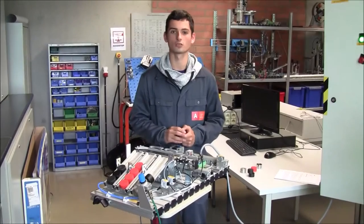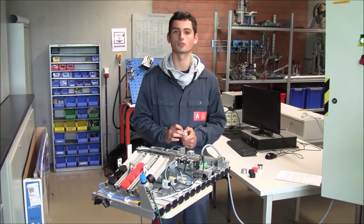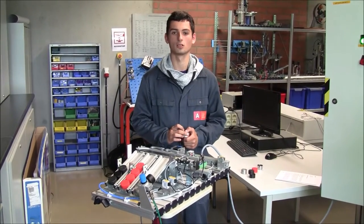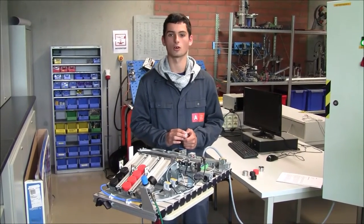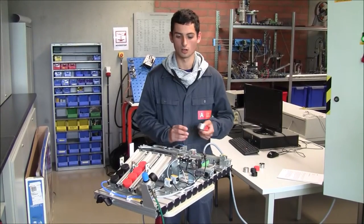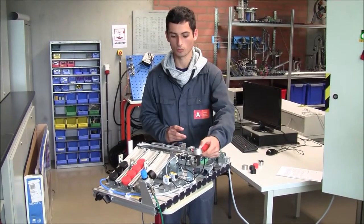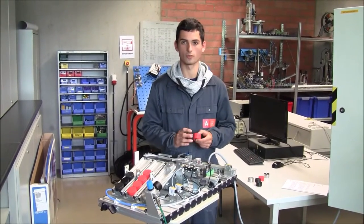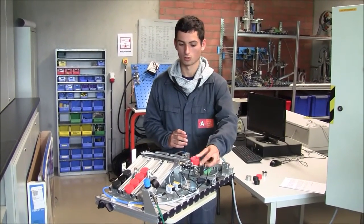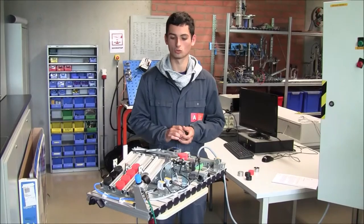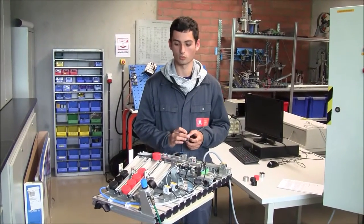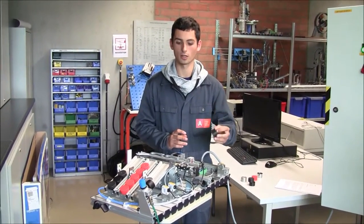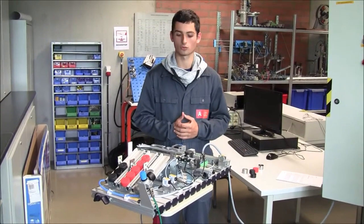This is the Festo sorting station. It sorts out material depending on quality like metal, color, or plastic. We have a metal object go to the first slide. We have also a colored object go to the second slide. And we have a black object go to the last slide.